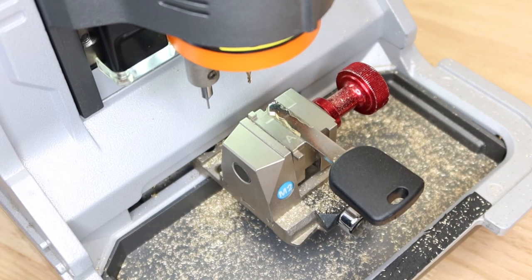All I've got to do now is flip the key over and run the same procedure on the other side. Next we'll use this key to help verify that the wafers we install are appropriate for the key code.